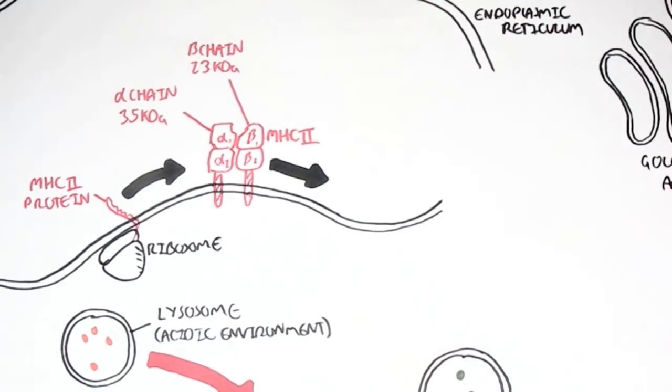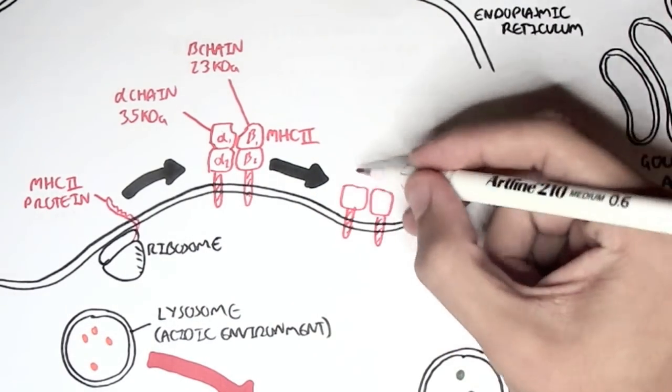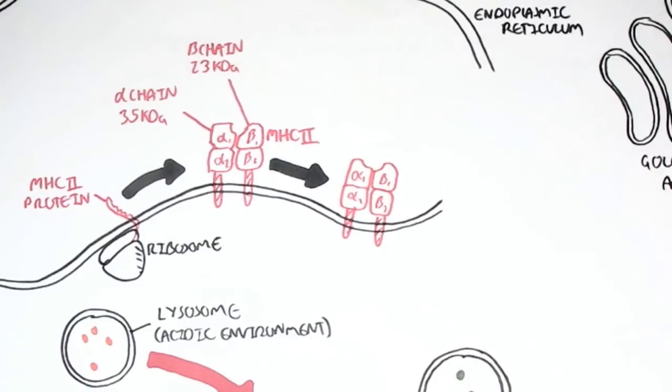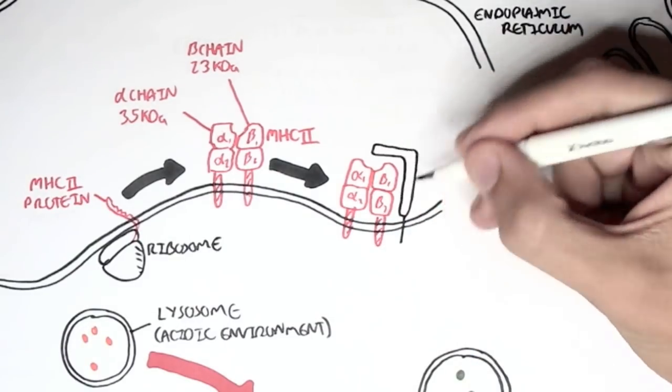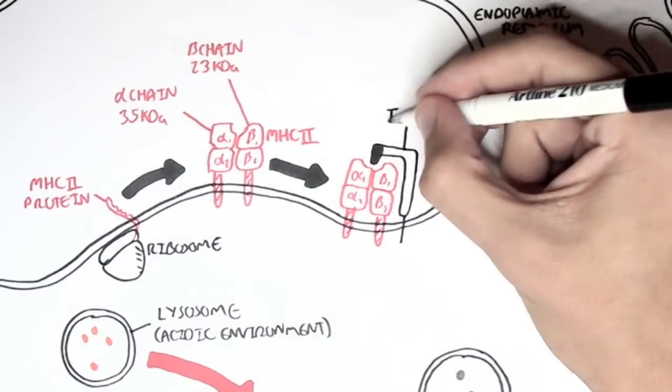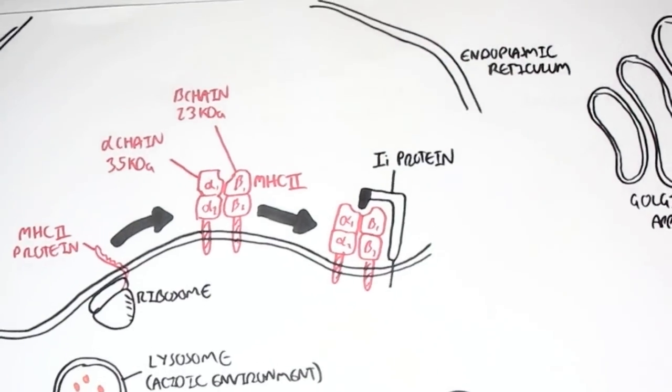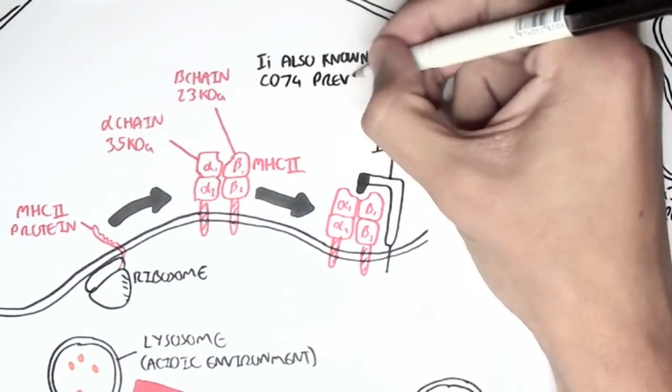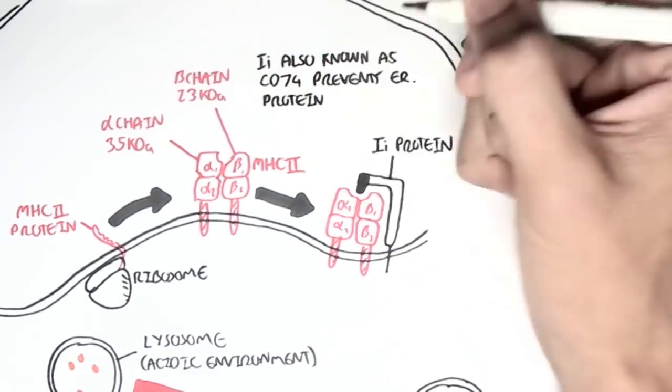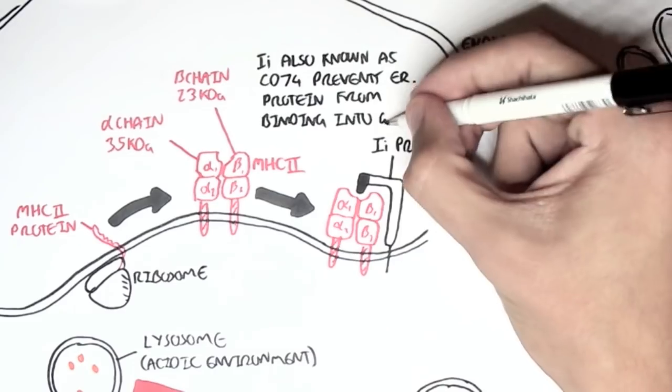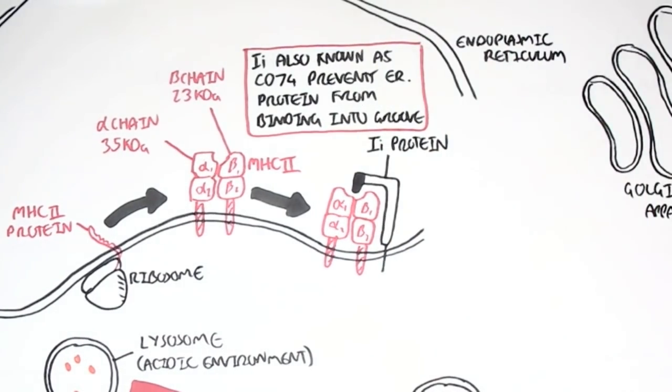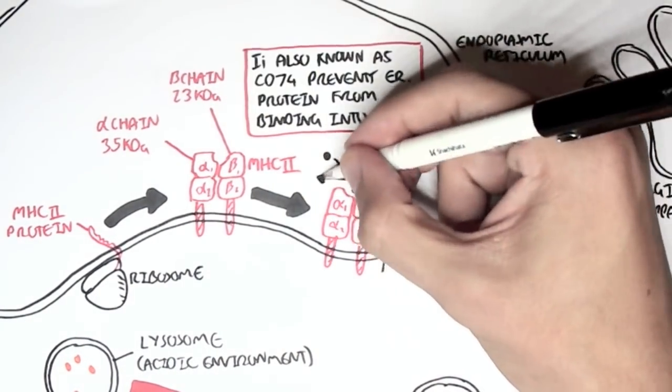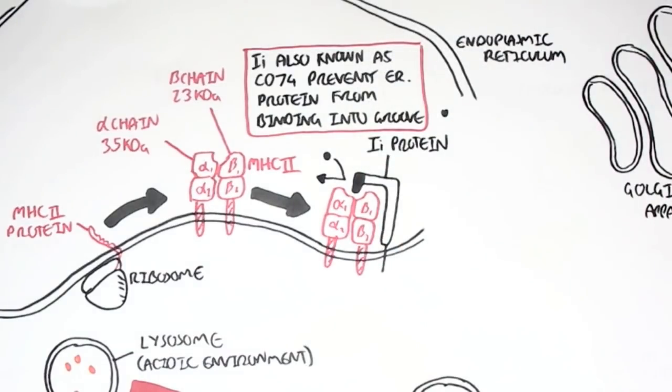The MHC class II will have another protein interacting with it as soon as it is synthesized. This protein is called II protein, or CD74, which will prevent endoplasmic reticulum proteins from binding onto the MHC class II groove. So it will prevent these sort of peptides from binding onto the groove here.